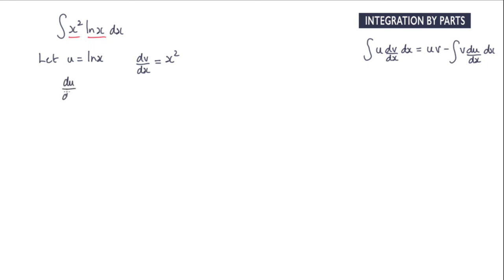du by dx, so I'm going to differentiate log x which is 1 over x. And we're going to integrate x squared to give x cubed and that's over 3.